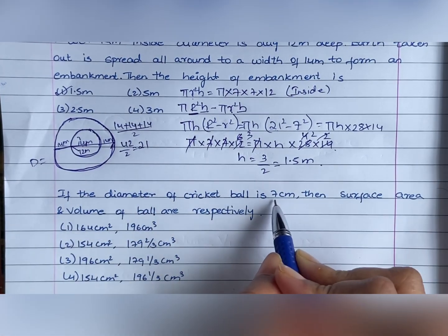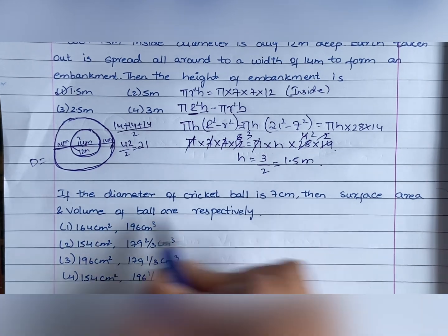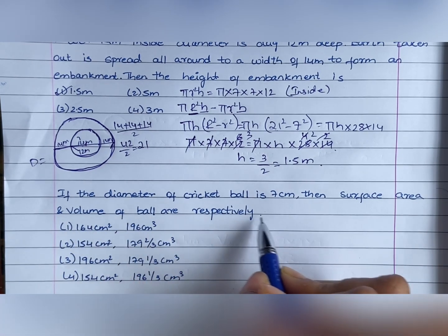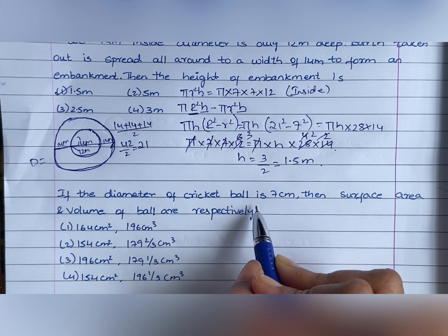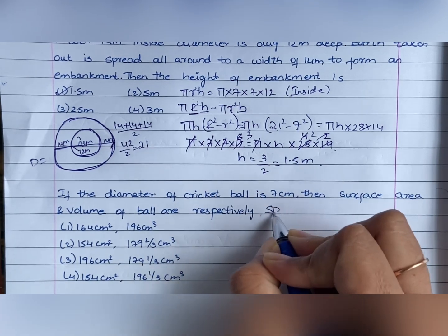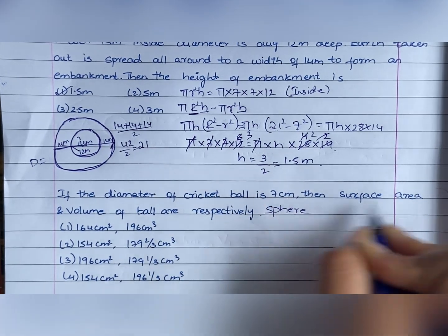If the diameter of cricket ball is 7 centimeters, then surface area and volume of ball are respectively. Cricket ball is sphere shape. So, what is the surface area of the sphere?